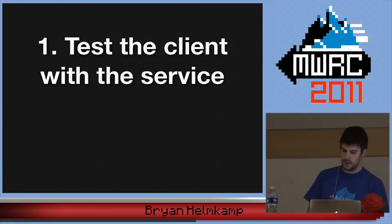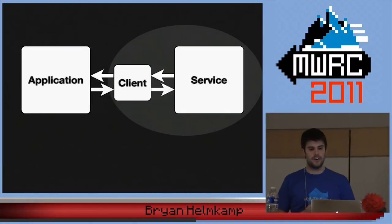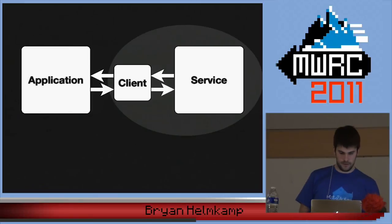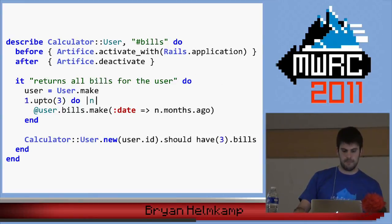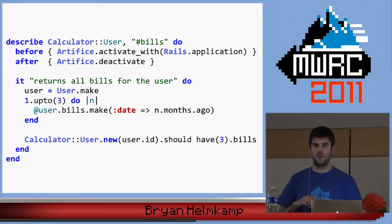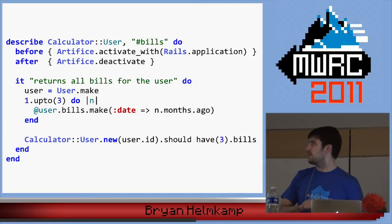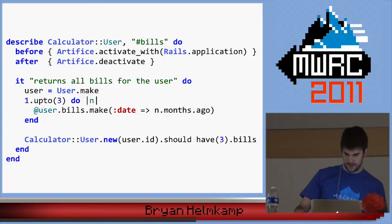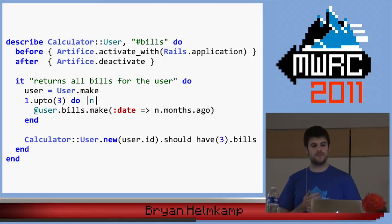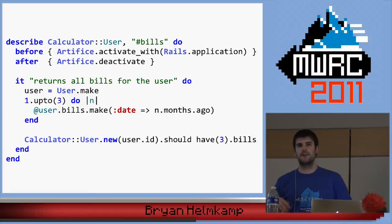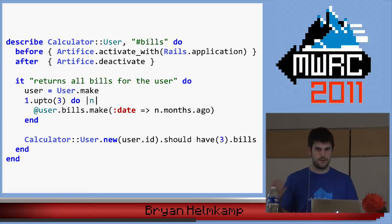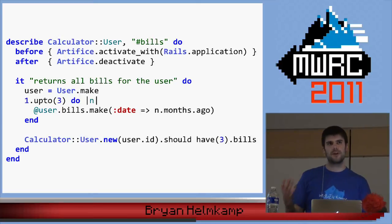So how many of you have heard of Artefist? Artefist is really cool — it's a library by Yehuda Katz. It's pretty simple, about 70 lines, but they're Yehuda Katz lines of code so that's like 700 lines of mortal programmer code. When you call activate-with, it replaces the NetHttp constant with a totally different thing.